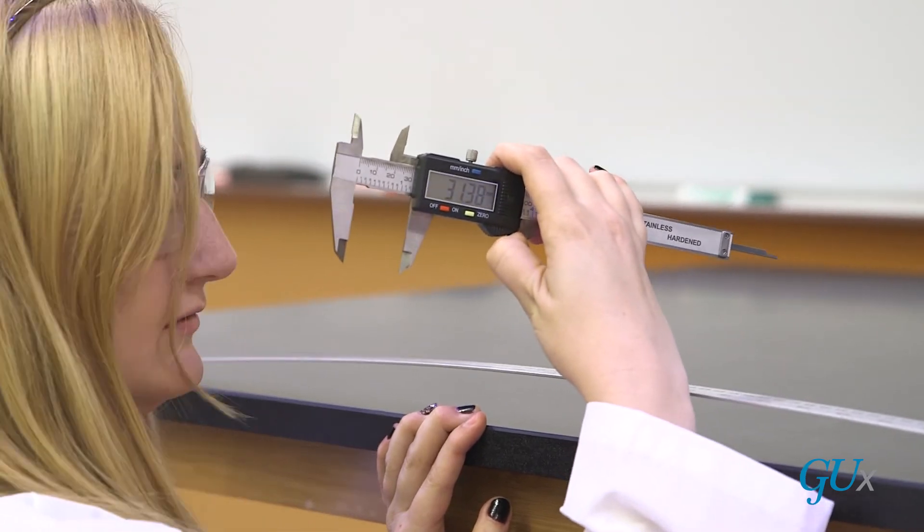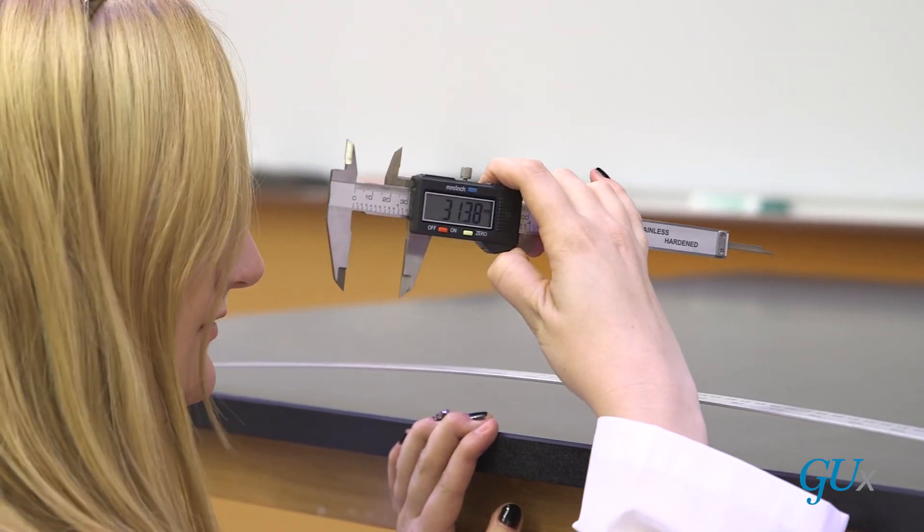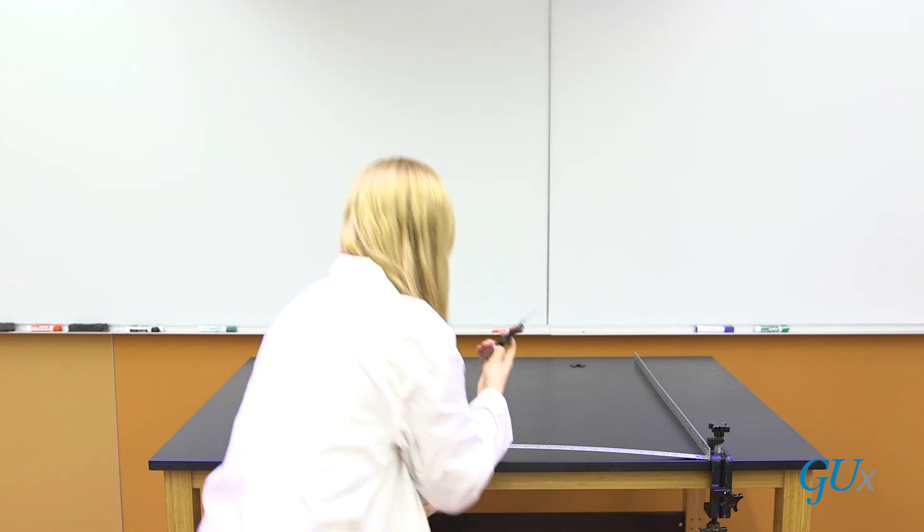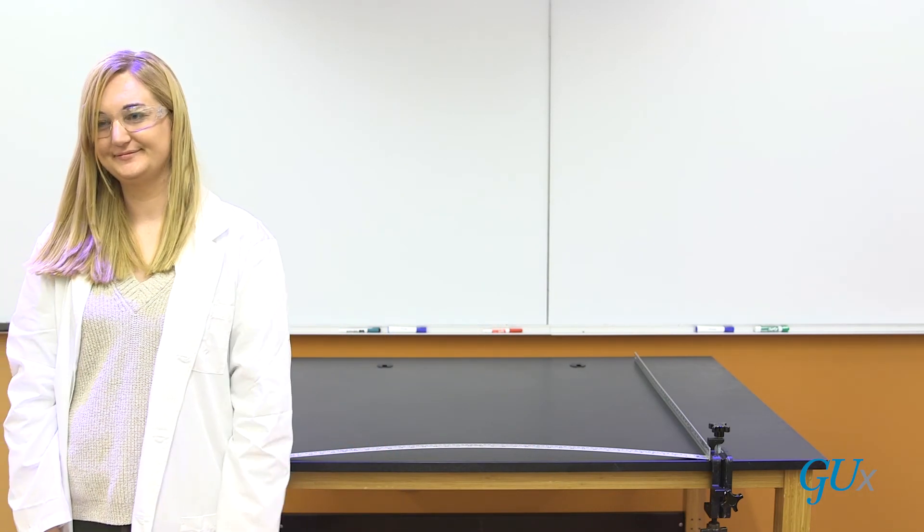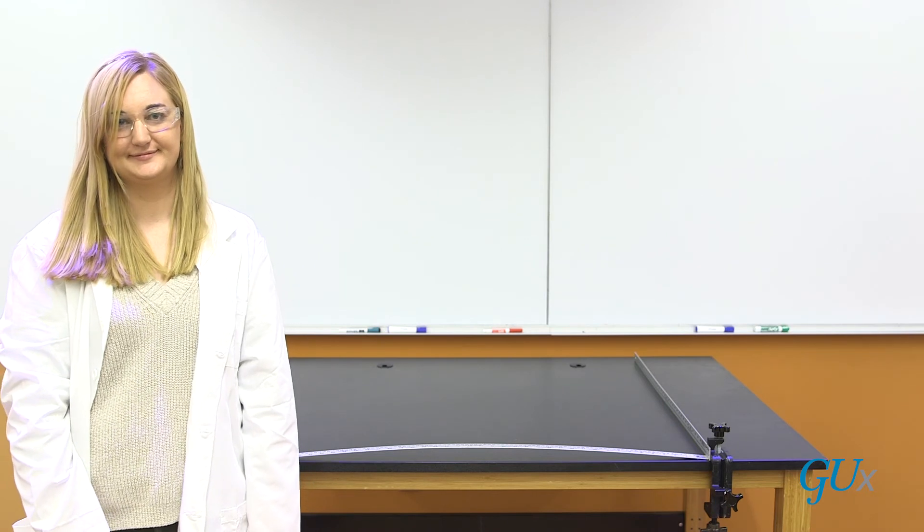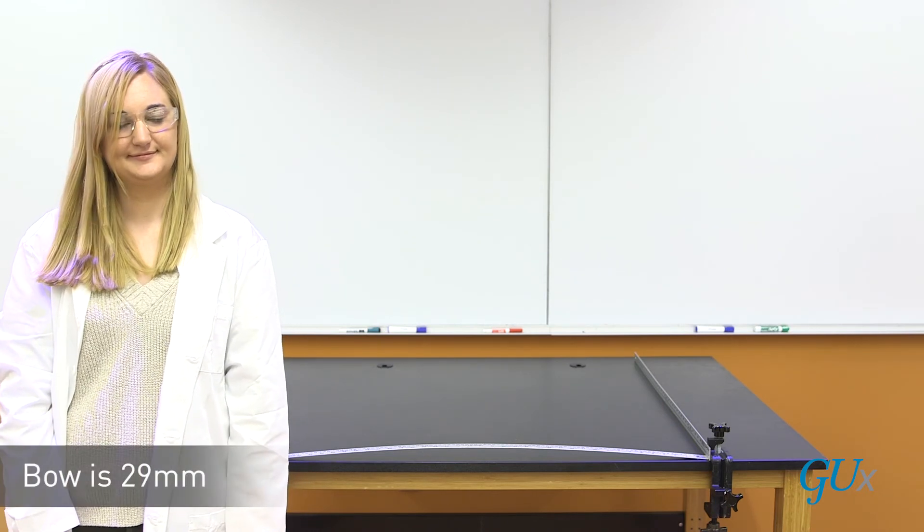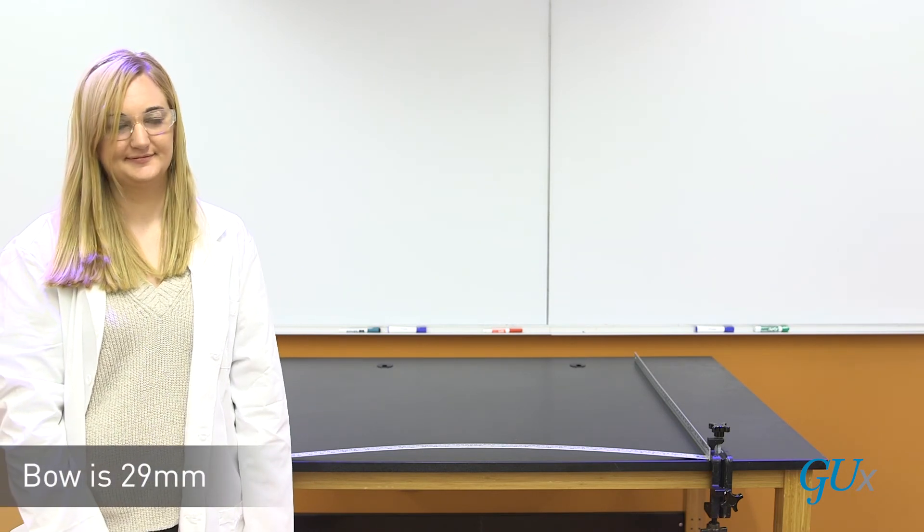So this is a factor of fifteen larger than the width that we put in. To be technically correct, we will subtract the width of the railroad rail and find that the actual bow is about 29 millimeters. So 29 millimeters to two millimeters is about a factor of fifteen.